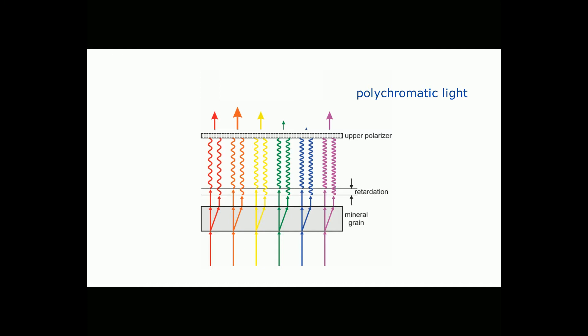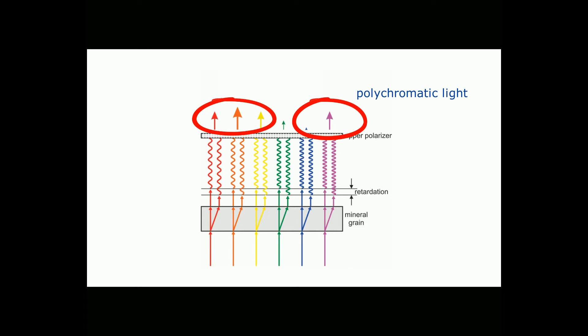In the example shown here, the green and the blue hues are suppressed, and almost all the orange gets through with lesser amounts of red, yellow, and violet. These colors will combine, and the result is that we might see an orangey-magenta color when we look down the microscope. The orangey-magenta color that we see is an interference color — it is the color we perceive, but it's really the color of many different wavelengths of light combined.